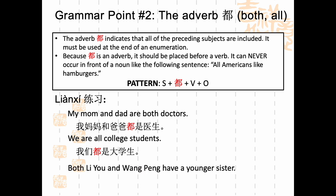Let's look at one more example. 中文怎么说？Both Liyou and Wang Peng have a younger sister. Here the verb will not be 是 — it's going to be 有. But since 都 is an adverb, it always comes before the verb regardless. So we would say 李友和Wang Peng都有一个妹妹. Note the measure word: if you have a quantity of an object, we need a measure word after the number.